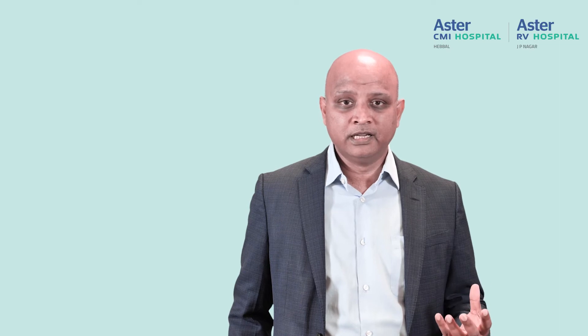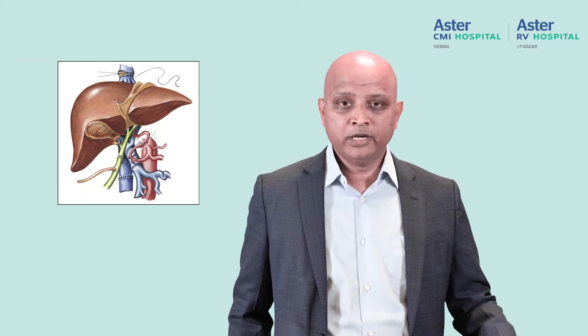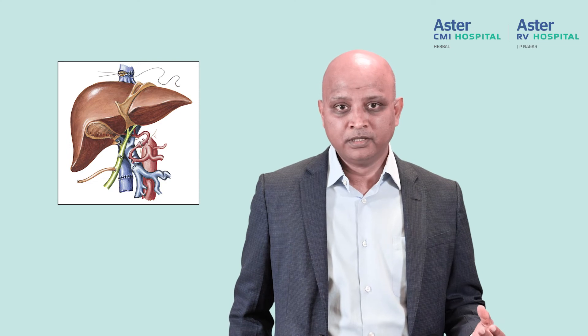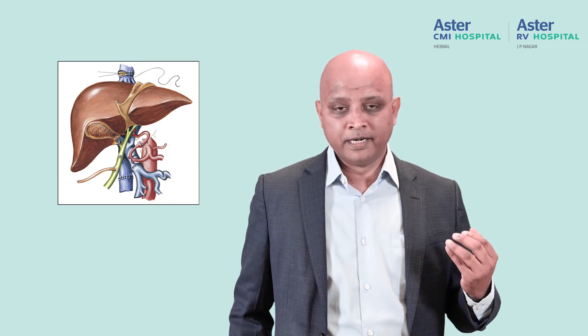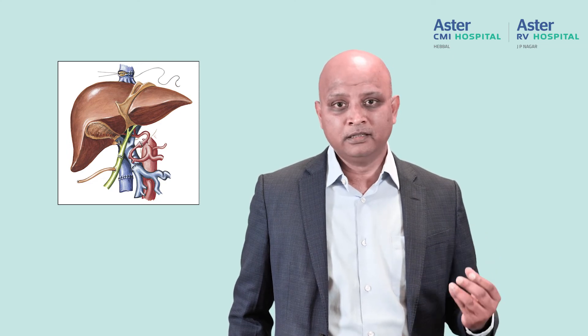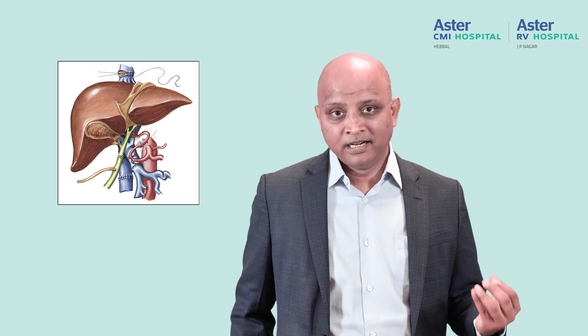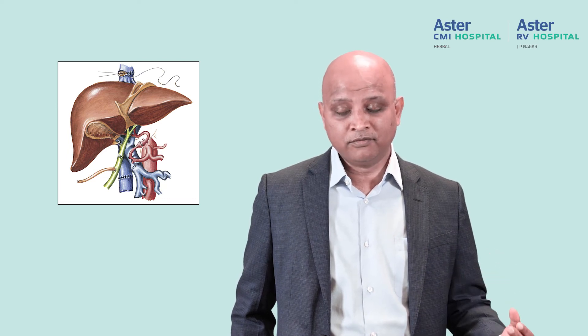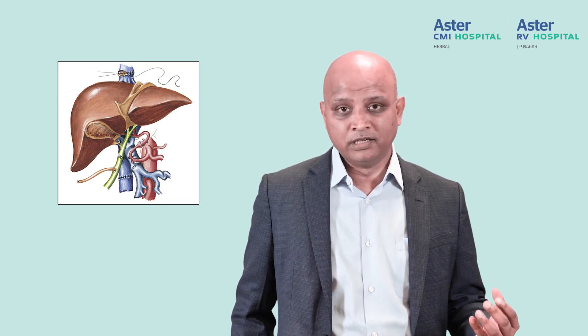The process of a liver transplant essentially involves removing the old liver by dividing these blood vessels, and replacing it by joining them all again so that blood can circulate through the liver fully. We have to join the hepatic artery, the portal vein, the bile ducts, and the hepatic veins so that blood can flow in and out of the liver.